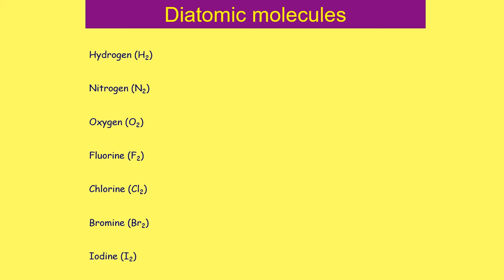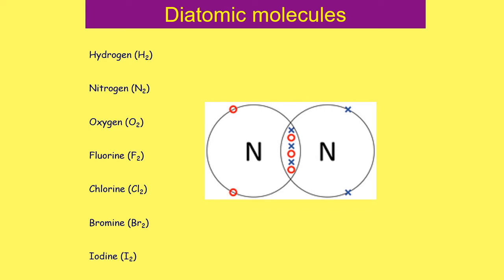Nitrogen is perhaps the most complicated. Nitrogen has five electrons in its outer shell, which can hold eight, so each nitrogen needs three more electrons. Each nitrogen therefore shares three of its electrons with the other nitrogen. In the overlapping part of the diagram, you can see three crosses from the right-hand nitrogen and three circles from the left. Each nitrogen has six electrons from the shared part and two that belong only to it, giving eight total.